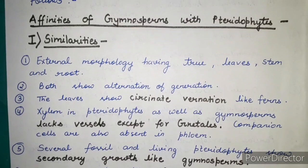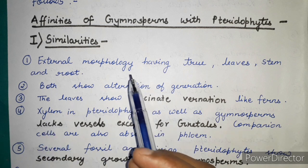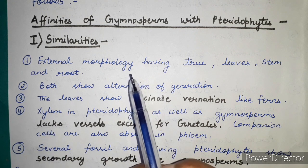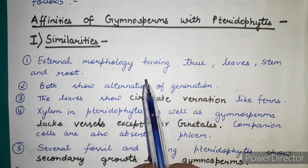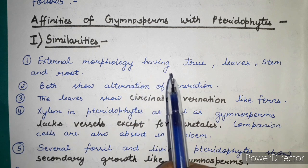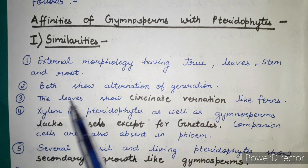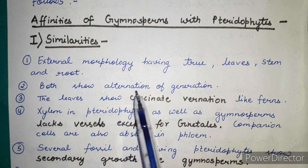In some pteridophytes, a suspensor is also formed during embryo development, as in gymnosperms. So, both gymnosperms and pteridophytes share many similarities: common external appearance with leaves, stem and roots; alternation of generations is found in both.